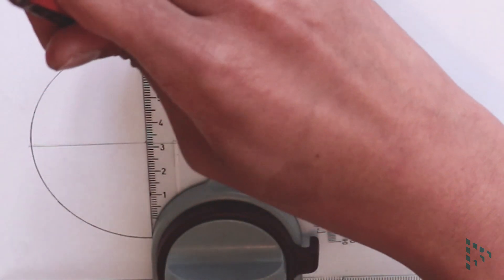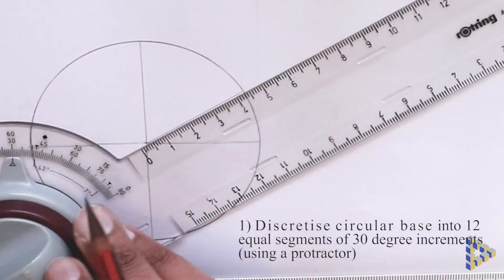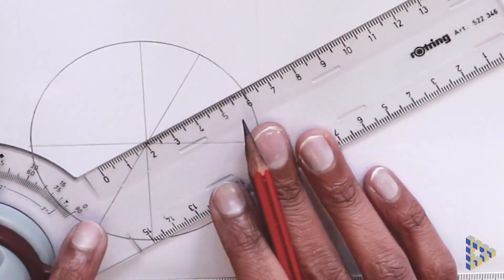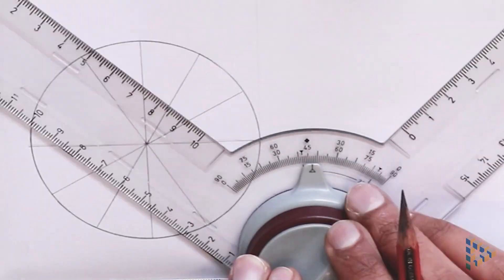I start here by discretizing the circular base of the cone into 12 equal segments, each separated by 30 degrees. I do so by using a protractor.